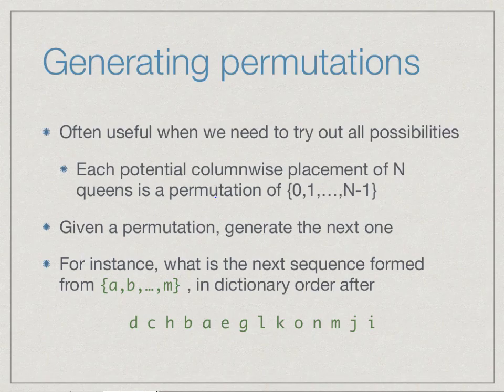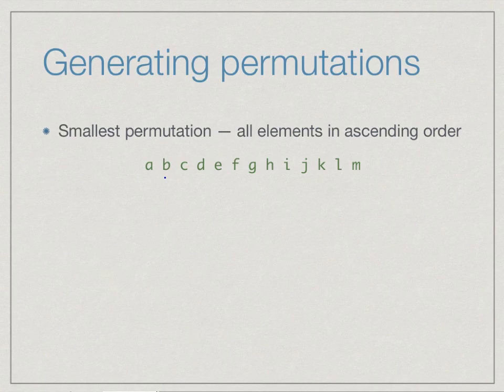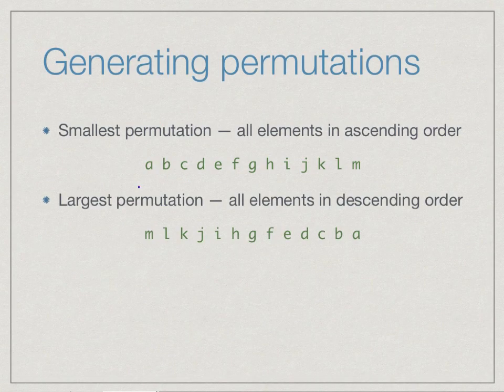To solve this problem, the first observation we can make is that the smallest permutation is the one in which the elements are arranged in ascending order. We start with a, which is the smallest one, then b and c, and so on. Similarly, the largest permutation is one in which all the elements are in descending order, starting with the largest element m and working backwards down to a.